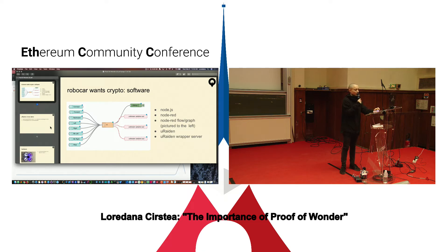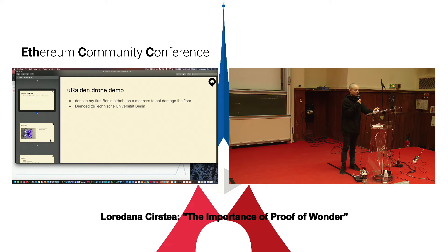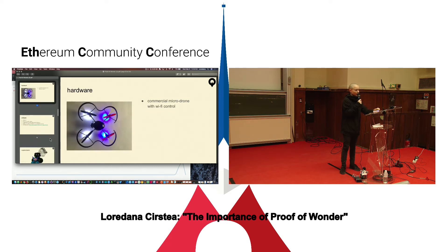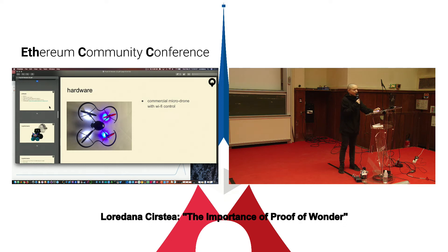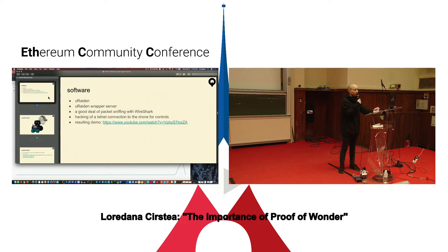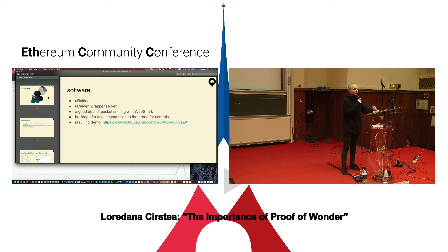The movements were paid with micro-Raiden, so you'd press a button and an off-chain payment would be done. For the drone demo, we got a commercial micro-drone. Because it could connect through WiFi, I tried to hack it — I connected with it in Python and built the micro-Raiden payments on those HTTP requests that made the drone move and take pictures. I used Wireshark to do some packet sniffing.